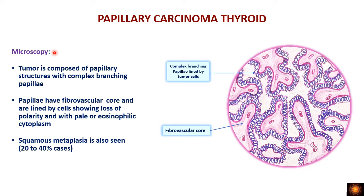On microscopy, the classic feature is complex branching papillae with a fibrovascular core — these are true papillae. Papillae means finger-like projections with a fibrovascular core; without a fibrovascular core they are called pseudopapillae. In papillary carcinoma, complex branching papillae with a fibrovascular core are lined by tumor cells showing typical nuclear features. Sometimes squamous metaplasia can also be found.